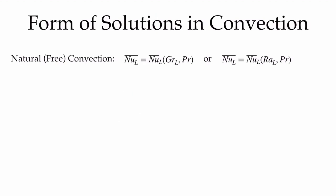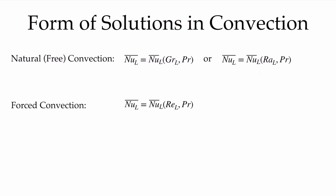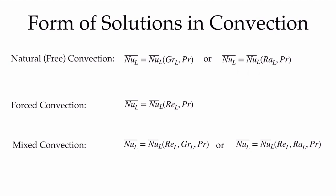In natural or free convection problems, the Grashof number takes the place of the Reynolds number, and we expect the average Nusselt number to be a function of the Grashof number and the Prandtl number, or equivalently a function of the Rayleigh number — and that's where we'll see most of our correlations. In forced convection, by comparison, the Nusselt number is a function of the Reynolds number and the Prandtl number. We could also have a situation where we're forcing a flow over a surface and also have temperature gradients causing density gradients; if both are of similar order of magnitude, we have a mixed convection problem correlating to all three parameters.